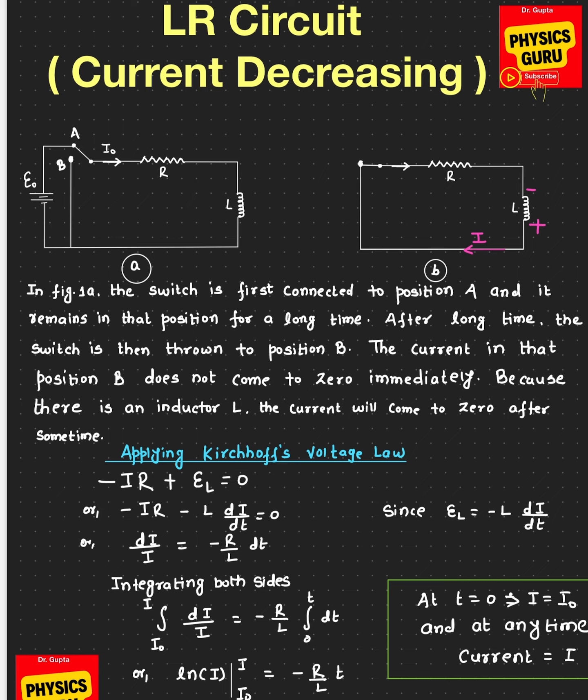Once the switch has been in position A for a long period of time, we throw the switch to position B. Once connected to position B, the current in this circuit starts decreasing. It does not come to zero immediately, although there is no direct voltage source in the circuit. It takes a certain amount of time for the current to come to zero, because there is an inductor in the circuit. The inductor resists changes — as the current starts decreasing, it doesn't like the current to come to zero, and it starts opposing it.